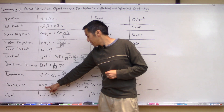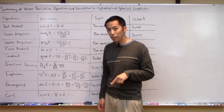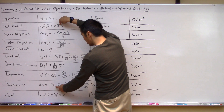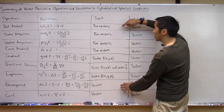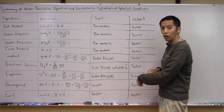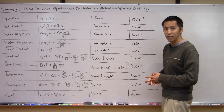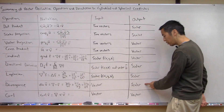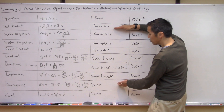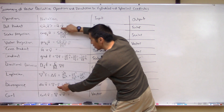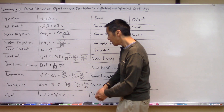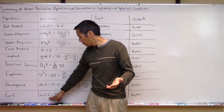The directional derivative looks at how some function f changes if you move in a specific direction b. The input is the scalar function f plus a direction vector b, and what it spits out is a scalar — the rate of change of the function in that direction b. The divergence, denoted as div v or nabla dot v, takes a vector field as input and produces a scalar. It's important to note that even though the notation may look similar to the dot product, the inputs and outputs are completely different.